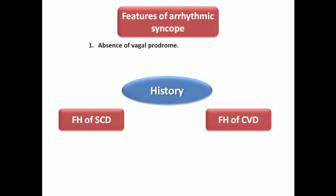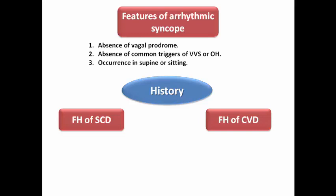The features of arrhythmic syncope include absence of vagal prodrome like sweating, nausea, and vomiting that may precede vasovagal syncope. There is also absence of common triggers of vasovagal syncope like psychological stress, prolonged standing, or orthostatic changes. Occurrence in supine or sitting position is one of the strongest features suggesting arrhythmic syncope, as is occurrence during or just after exercise.